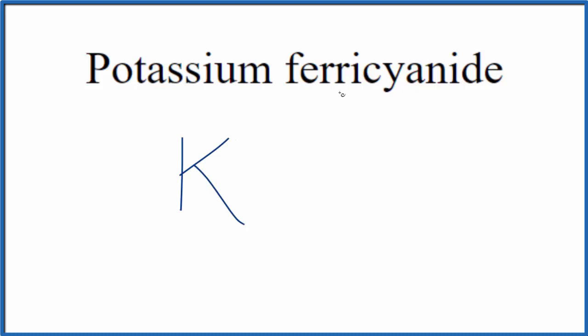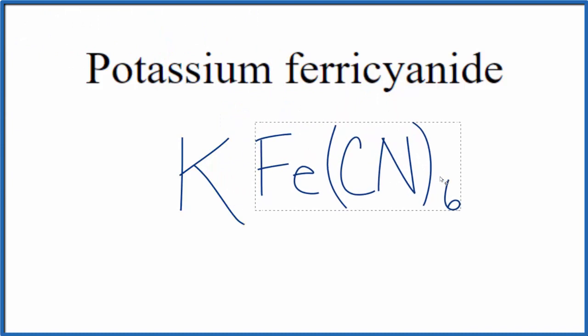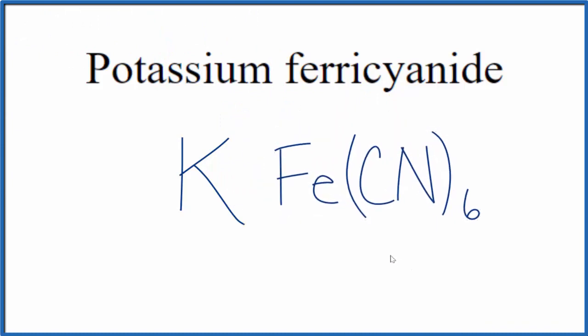But this ferrocyanide, you're not going to find ferrocyanide on the periodic table. This is actually a polyatomic ion, and it's a little bit of a complex polyatomic ion. It's Fe(CN)6, and you'll normally see brackets placed around the Fe(CN)6, the ferrocyanide, and it has a 3 minus ionic charge.